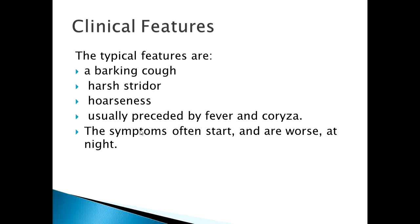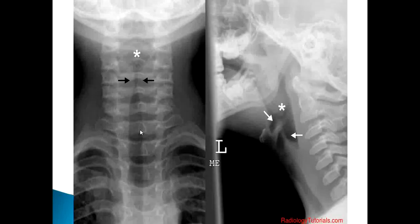The clinical features of croup: the mother may come to OPD and describe that the child has had a low-grade fever and hoarse voice for one to two days. Sometimes the child coughs in the OPD and if you hear the cough it will be a typical barking cough, along with stridor. Stridor is an inspiratory sound produced due to narrowing of the upper airway. Sometimes you can hear it without a stethoscope, but most of the time you need a stethoscope and a silent room.